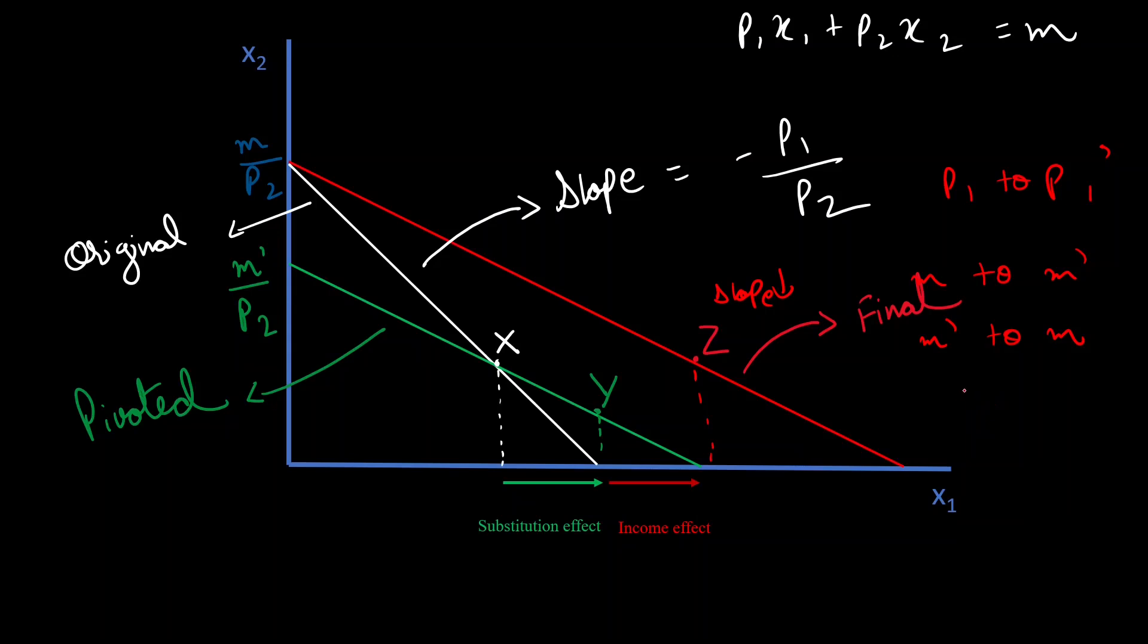So, our intercepts are changing, but our slope remains the same. That's why there is a parallel shift. So, Z is our final demand bundle. And this is how you break your total change in demand down between substitution and income effects.